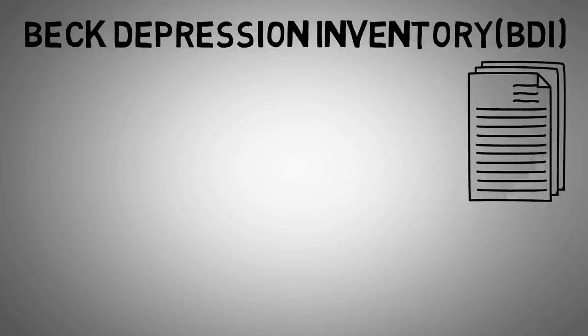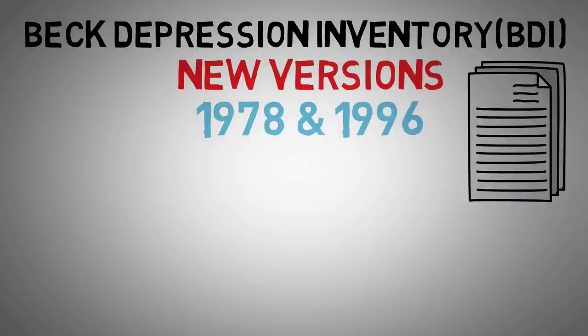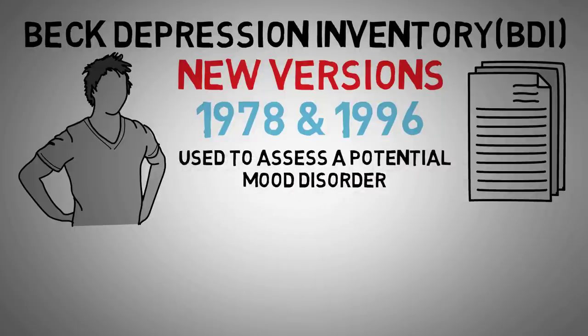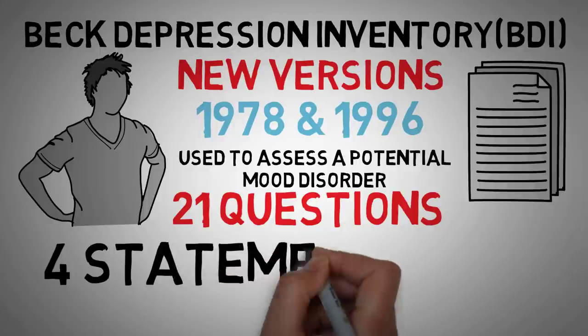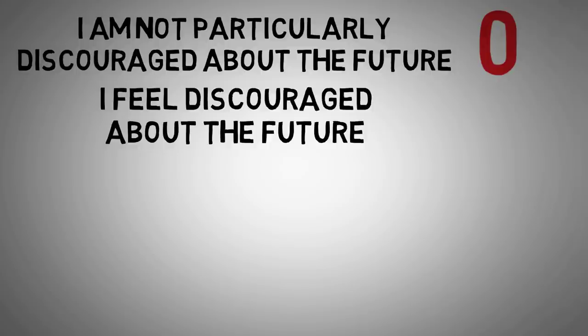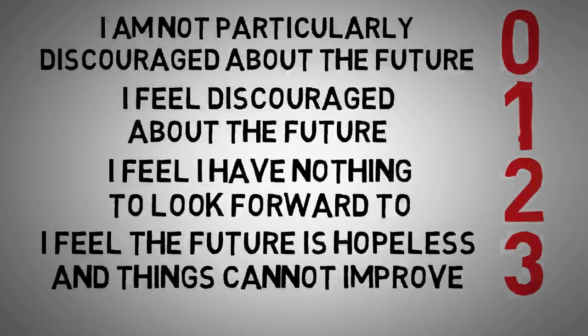The current version of the Beck Depression Inventory is similar to the original version created in 1961, but it has undergone some changes. New versions were published in both 1978 and 1996, and experts recommend this tool primarily for adolescents over the age of 13, but it can also be used to assess an adult's feelings and potential mood disorder. All versions are a self-assessment quiz with 21 questions. Each question consists of four statements, and each one of those statements corresponds with a number from zero to three.